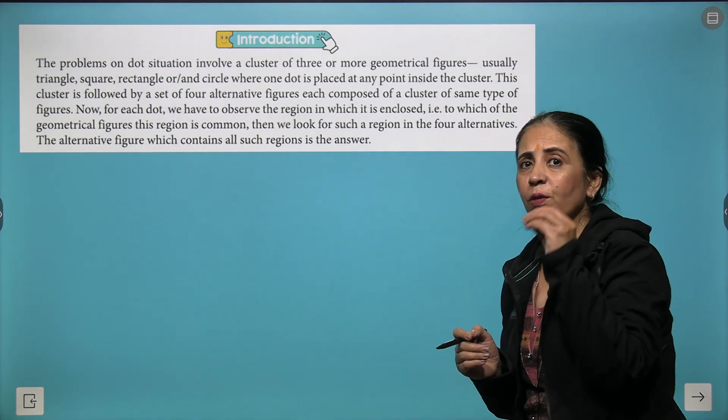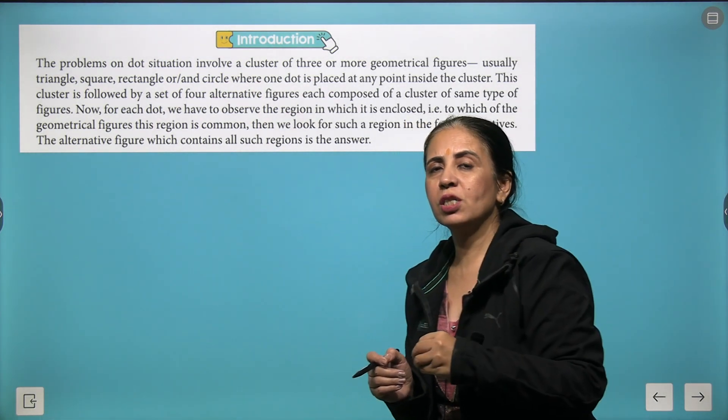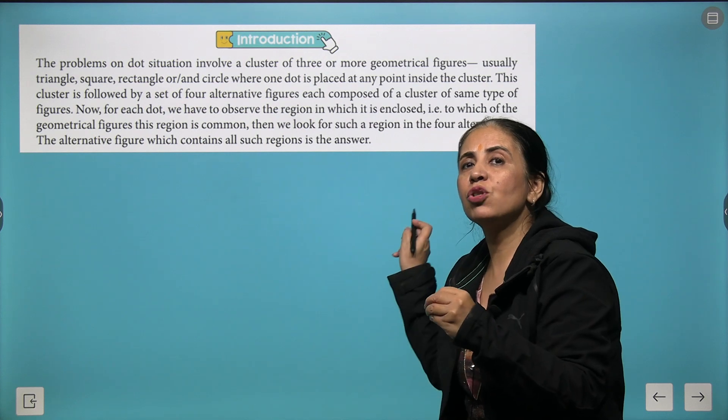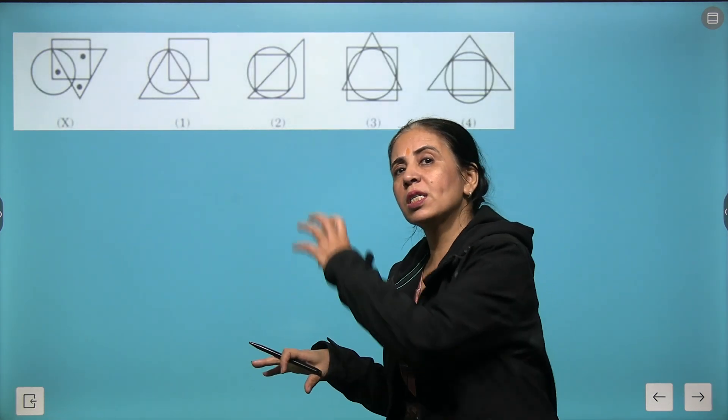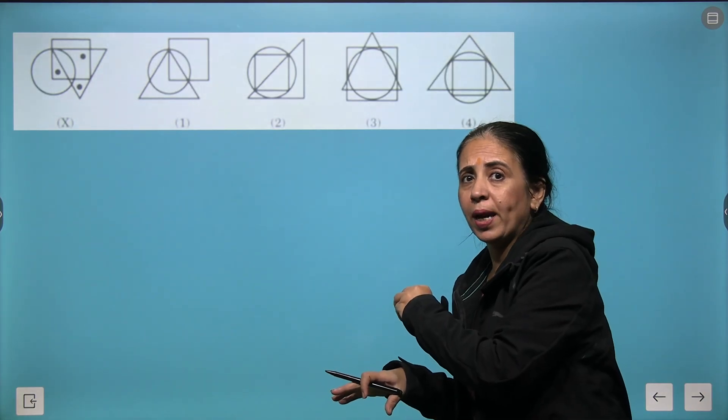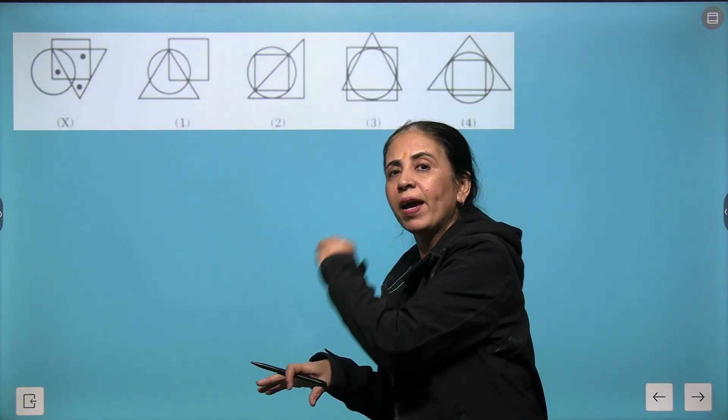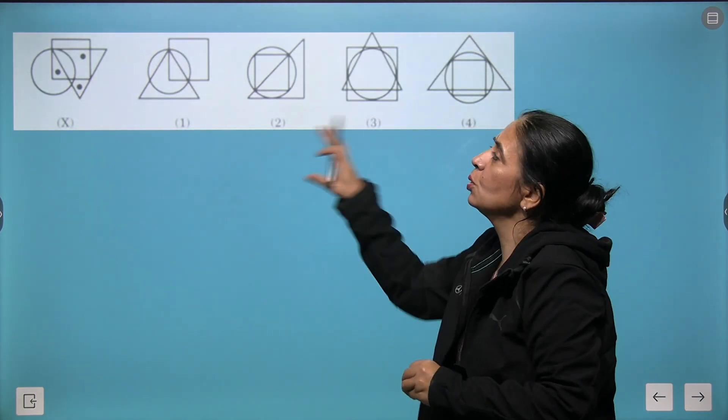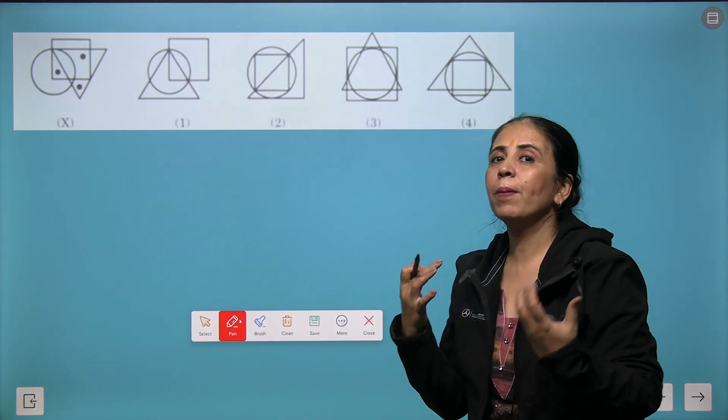We will try to give the location to those dots in the given option. If we are able to locate the dots at the right position, then we find the correct answer to the problem. Now let's try a few examples so that you become good at analysis of dot situations.